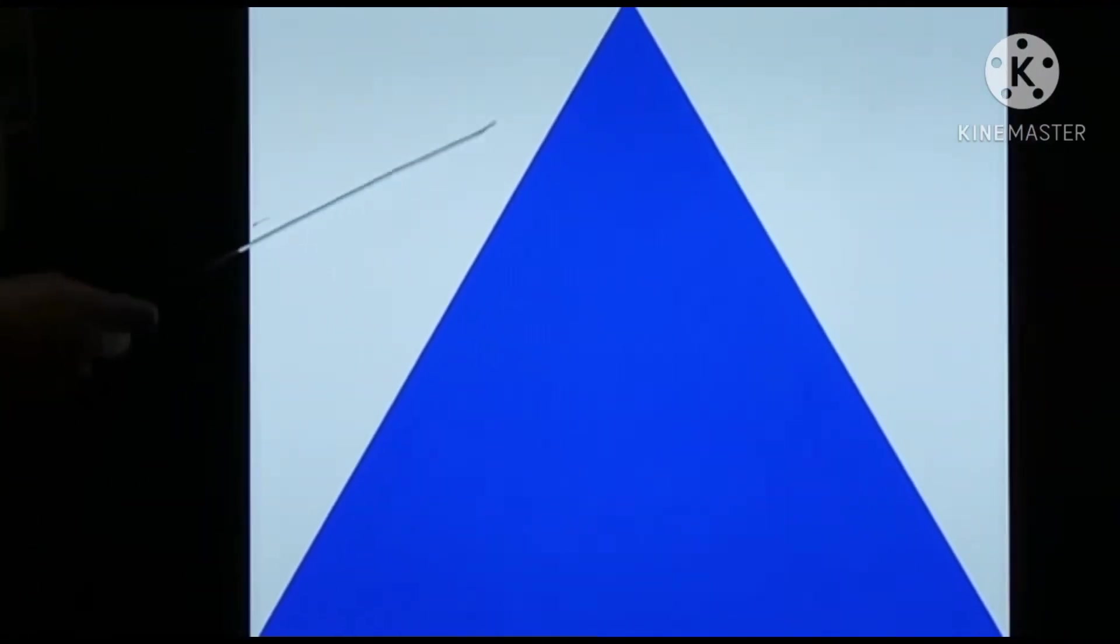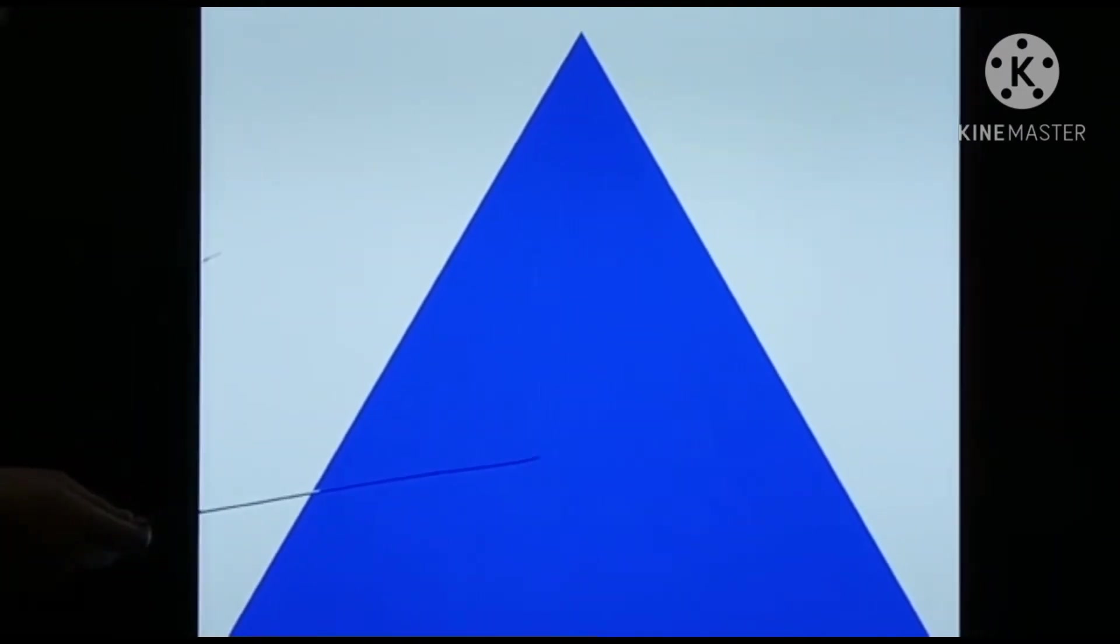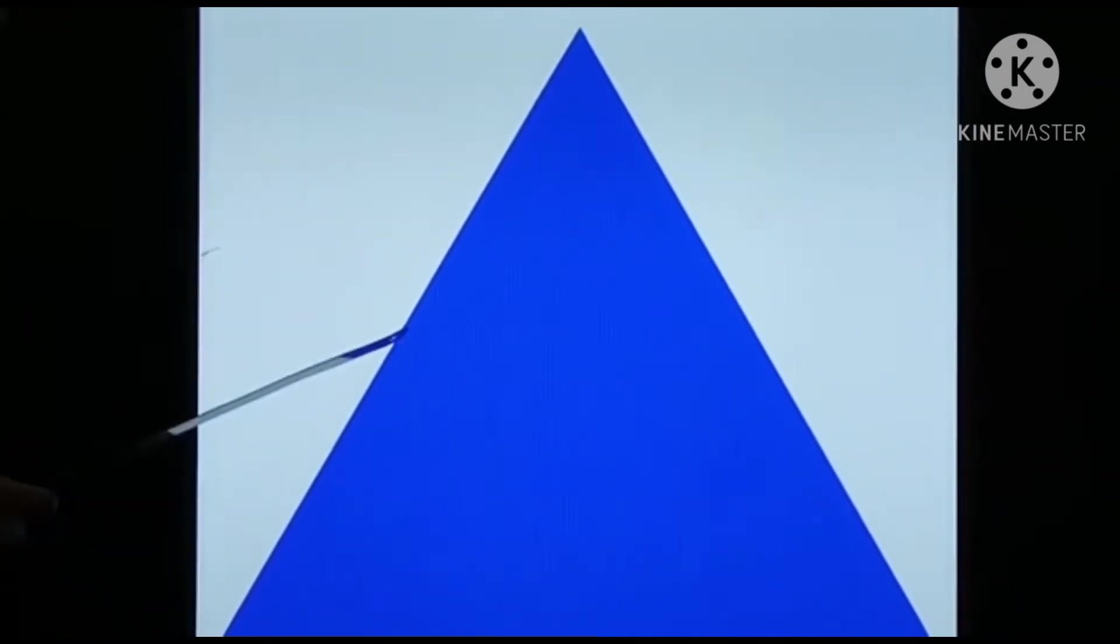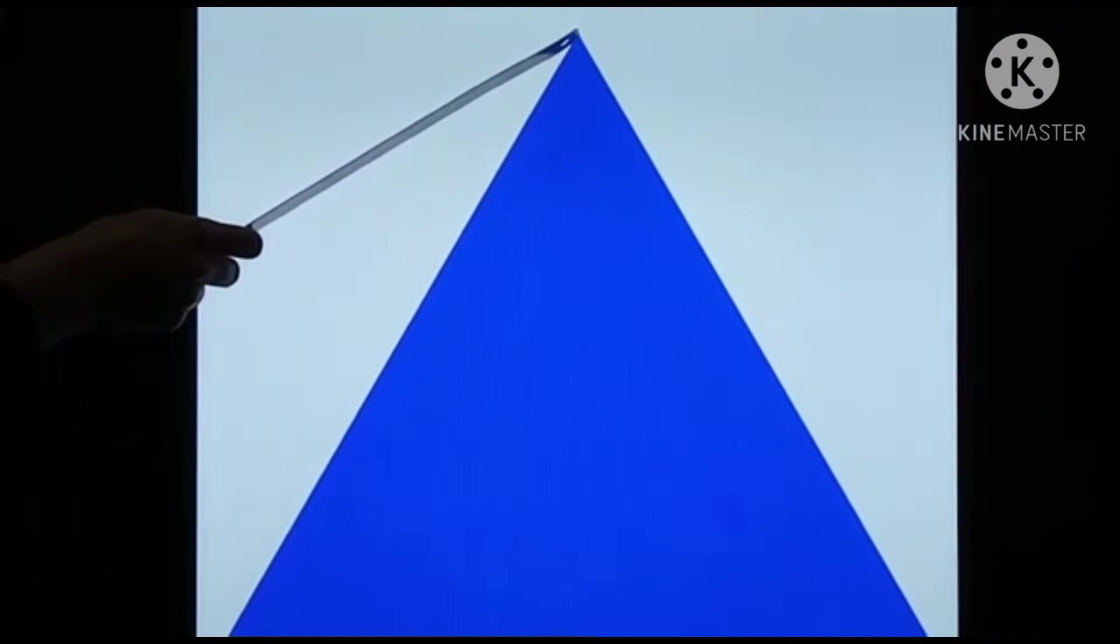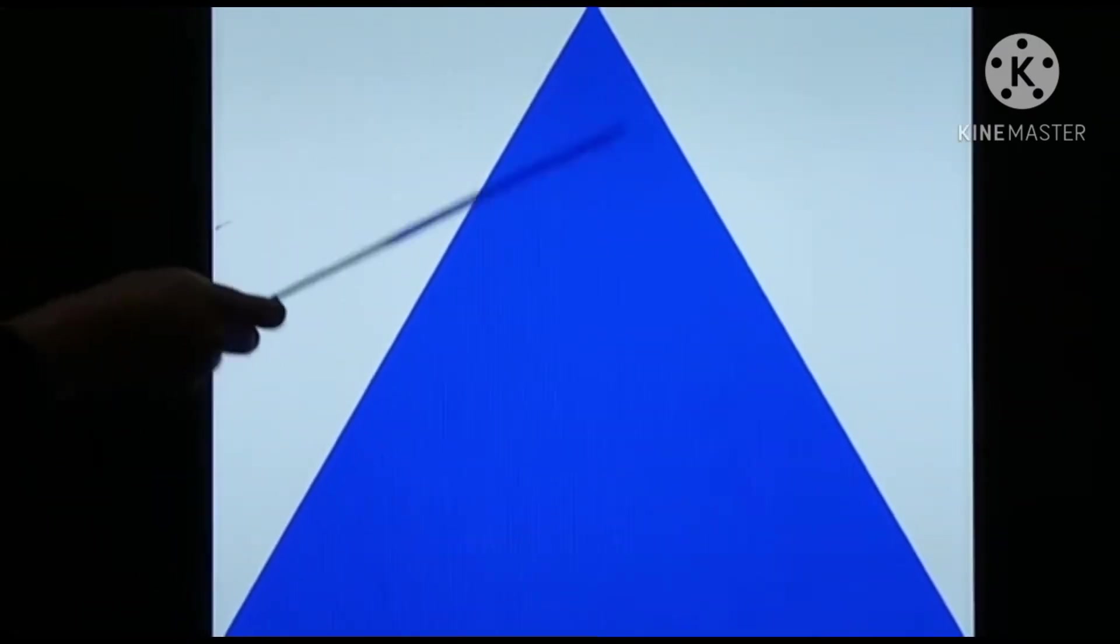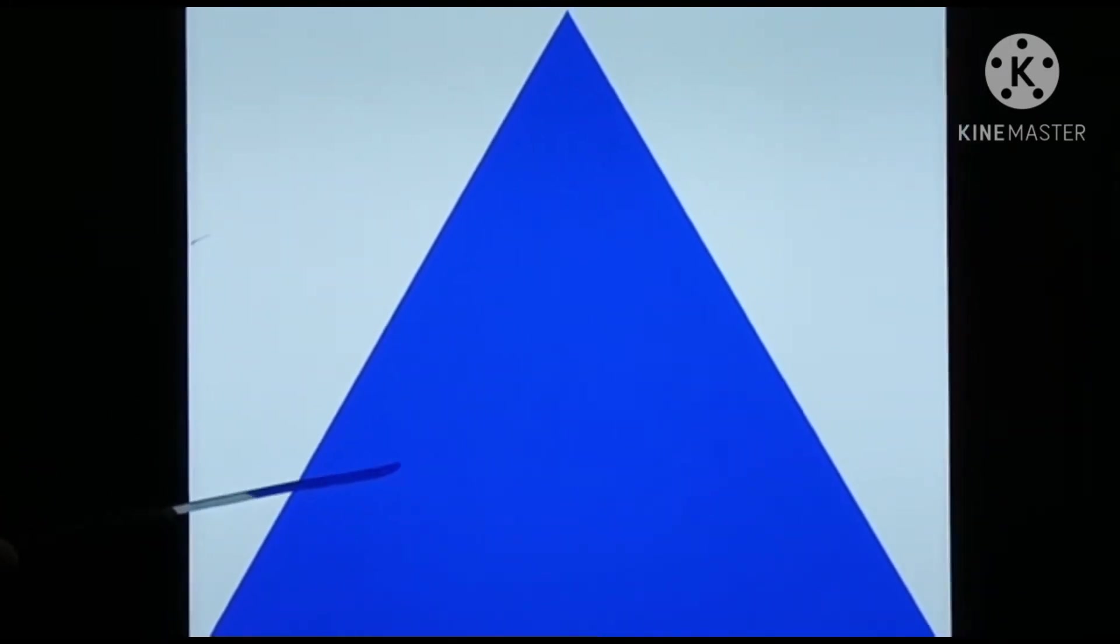Which shape is this? Can you tell me? Any guesses? It's triangle. Triangle has three corners. One, two, three. Three corners. Triangle has three corners. Which shape is this? It's triangle.